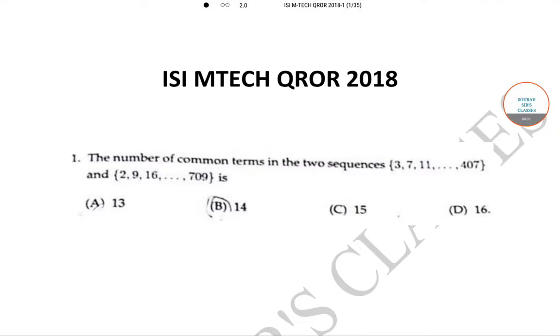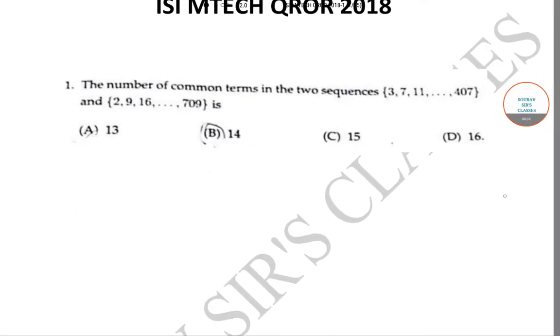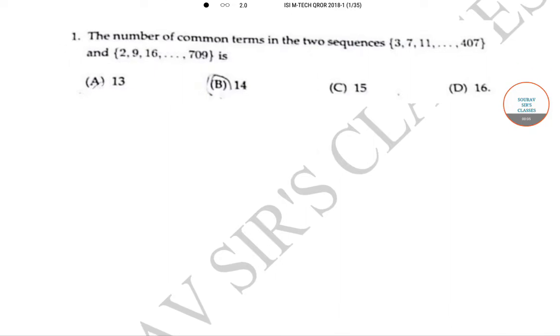Hello students, welcome to Saurav Search Classes. The question is: find the number of common terms in the two sequences {3, 7, 11, ..., 407} and {2, 9, 16, ..., 709}.